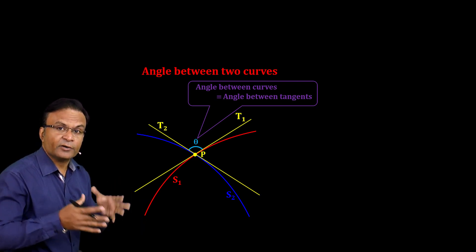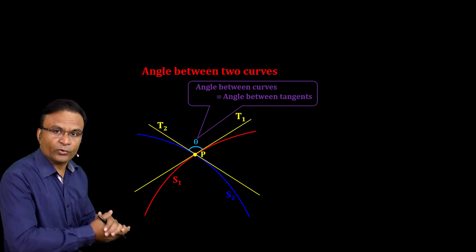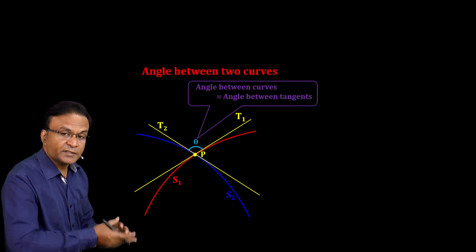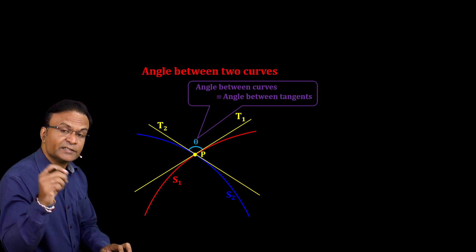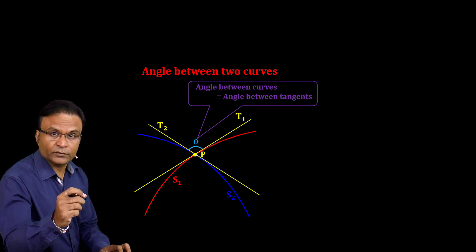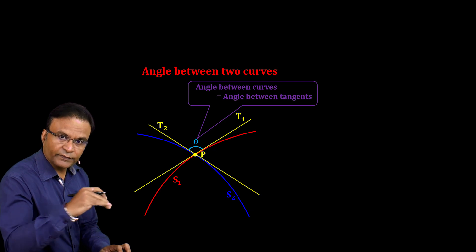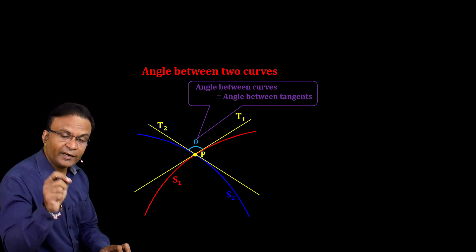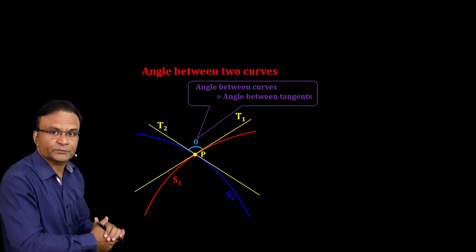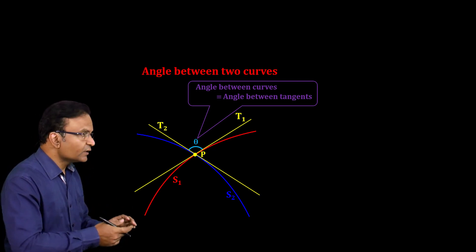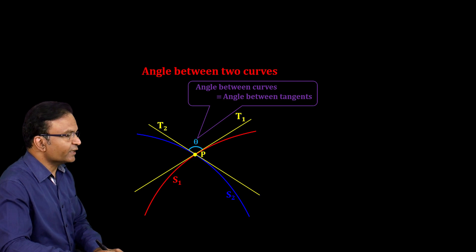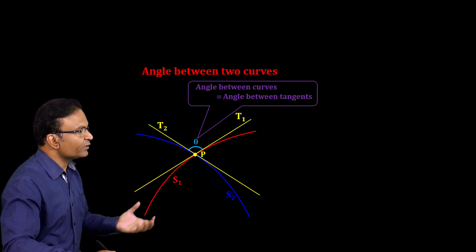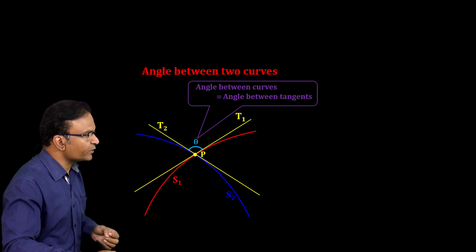The tangents are drawn at the point of intersection. This is the reason why tangents and normals are important — to study the surface property of any curve, tangents and normals are what you need. Suppose this angle is theta. The angle theta between the tangents is the angle between the two curves at point P.